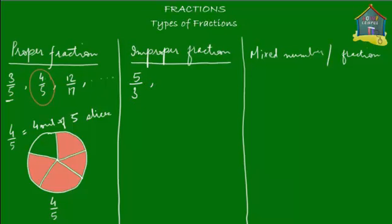If we take the proper fraction examples and invert them — flip or switch the numerators with the denominators — we get improper fractions. For example, 3 upon 5 becomes 5 upon 3; 4 upon 5 becomes 5 upon 4; and 17 upon 12 is another improper fraction. We said the improper fraction could also have its numerator equal to its denominator, so 4 upon 4 is also an improper fraction.